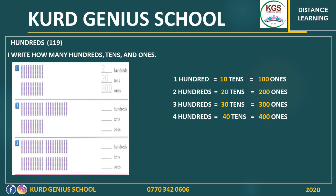Three hundreds equals 30 tens and equals 300 ones. Number two: 100, 200, 300 — so three hundreds equals 30 tens and equals 300 ones. Number three: we have 100, 200, 300, 400 — so how many hundreds do we have? Four. Whenever we have 400 it means we have 40 tens and 400 ones.